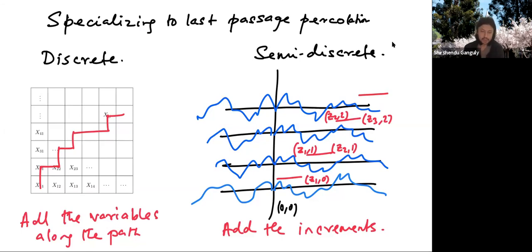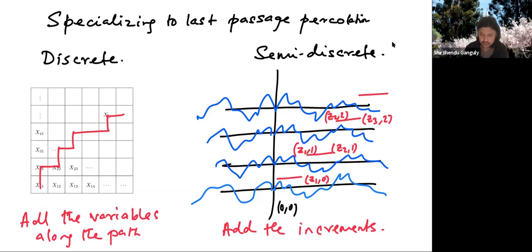There's also a semi-discrete setting, where instead of the discrete lattice, you have integer-many copies of the real line indexed by integers. For each real line, you have some function, let's say pinned at the origin so every function is zero at zero. Given any oriented path between two points, you simply add the increments of the functions at the corresponding levels. The weight of a path would be the sum of those increments. We'll work with the semi-discrete model where the noise functions are IID two-sided Brownian motions, which goes by the name of Brownian last passage percolation.